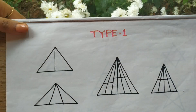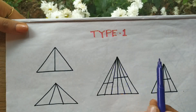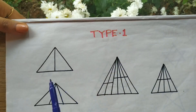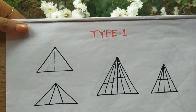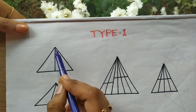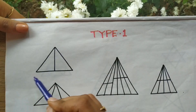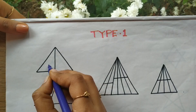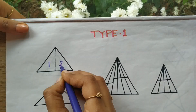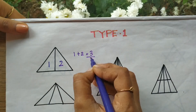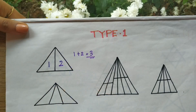Let's try finding the number of triangles in these particular figures. This will come under Type 1 because they all have the same base. What we basically do is count one, two, three — but we have a trick for this. We add one plus two, which equals three. This is how we find the total number of triangles in this particular figure.